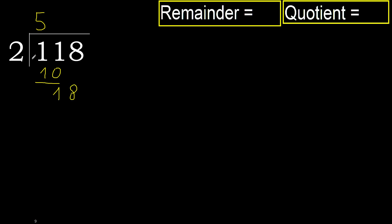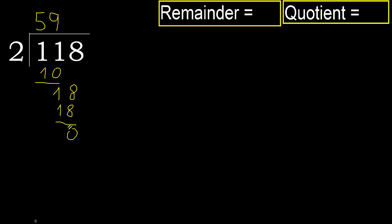18. 2 multiplied by 9 is 18. 18 is not greater, okay. Subtract — 0. Next.